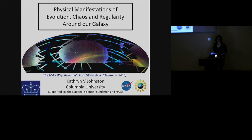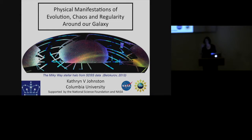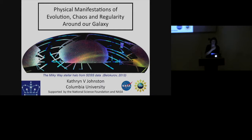Thanks very much for the invitation. I just had a couple of great days at Cambridge and this is my first visit to the physical location of the Royal Astronomical Society. So, Physical Manifestations of Evolution, Chaos and Regularity Around Our Galaxy — it's going to be a completely different topic from the last two talks. The talk is about very low surface brightness features and structures that we found in stars around our galaxy.